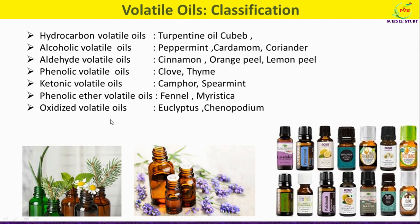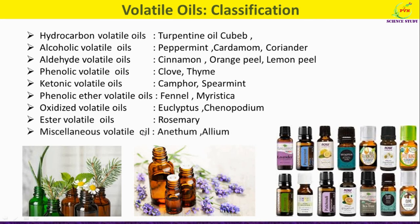Next is oxidized volatile oils, seen in eucalyptus and Chenopodium. Next is ester volatile oils, seen in rosemary. And last is miscellaneous volatile oils, seen in anethole-containing plants and Allium. With this we have completed the classification of volatile oils.